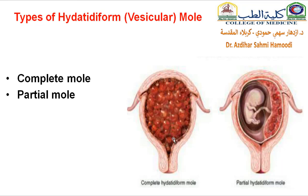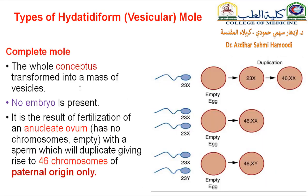We have two types of molar pregnancy. In the complete mole, the whole uterine cavity is filled with vesicles, completely, without an embryo. In the partial mole, part of the trophoblast tissue shows molar changes, and the other part will be an amniotic sac with or without a fetus. In complete mole, the whole conceptus is transformed into a mass of vesicles with no embryo, resulting from fertilization of an empty, unnucleated ovum — without DNA or chromosomes — by a sperm that duplicates inside the ovum to produce a conceptus of 46 chromosomes, but of paternal origin only. Sometimes two sperm fertilize this empty ovum, but the end result is the same: 46 chromosomes.